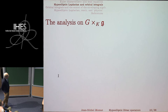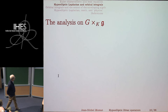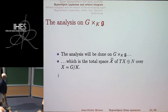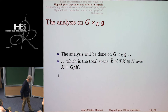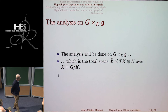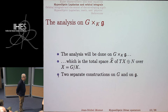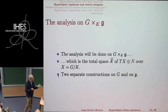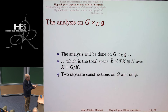The analysis will be done on the product of the group by its Lie algebra, quotiented by K — which acts on the group on the right and on the Lie algebra on the left. This object is itself both a group-theoretic and geometric object: the total space X̂ of the bundle TX⊕N over X = G/K. For SL(2,R), differential operators will occur on a space of total dimension 2 + 3 = 5. There will be a non-trivial coupling between the base and the fiber.